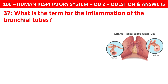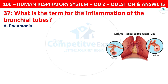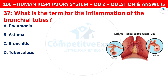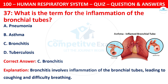Question 37: What is the term for the inflammation of the bronchial tubes? The options are: pneumonia, asthma, bronchitis, or tuberculosis. The correct answer is C — bronchitis. Bronchitis involves inflammation of the bronchial tubes, leading to coughing and difficulty in breathing.